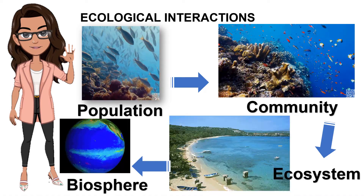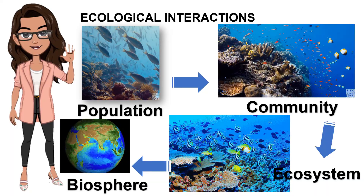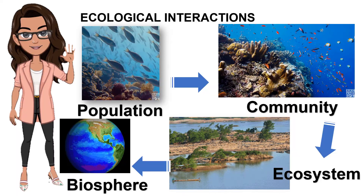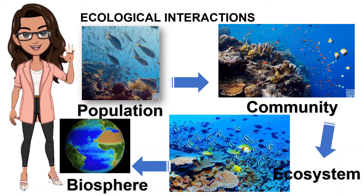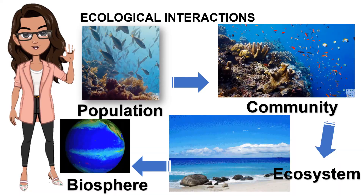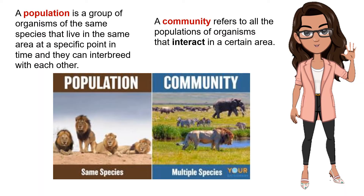Individuals live together in populations. Different populations together make up a community. Communities together with the non-living things in their surroundings make up an ecosystem. A population is a group of organisms of the same species that live in the same area at a specific point in time and they can interbreed with each other. When a scientist studies a population, they might study how the population grows and the factors that affect how the population increases or decreases. They will also look at how the population interacts with the environment.